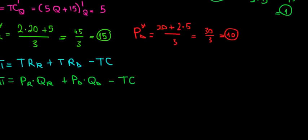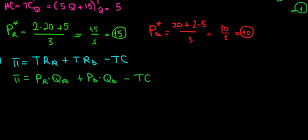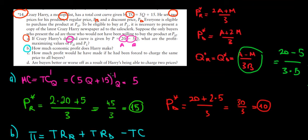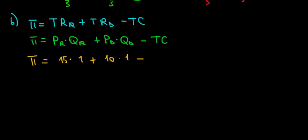So let's keep that in mind and work this out over here. The profit is going to be the price that we charge the regular customers, that's 15 for one unit, plus the price for the discount customers, that's 10 multiplied with one unit, minus the total cost. And the total cost, we'll just take it from the question: 5Q plus 15 over here.